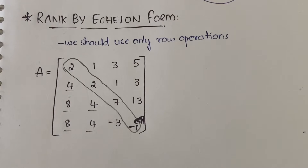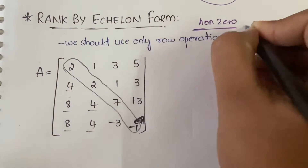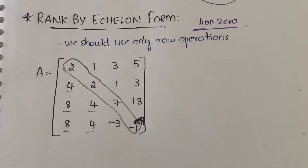So let's get into the video. Basically, rank is nothing but the number of non-zero rows — the number of non-zero rows is called the rank. What you have to do is, by doing some elementary row operations, you need to make as many terms as possible equal to 0. Once you make those terms 0, however many non-zero rows you have remaining is called the echelon form result.